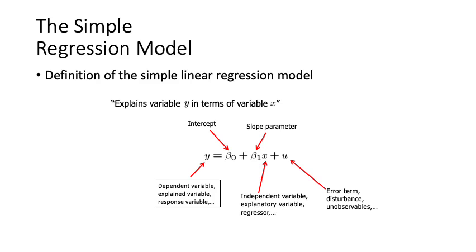Beta naught represents the intercept — the value of y when x equals zero. Beta 1 is the slope, which shows the change in y when x is changed by one unit. u is the error term, sometimes called the disturbance or unobservable. This model is a cornerstone for our study, as understanding this simple model will open the door to understanding more complicated models.